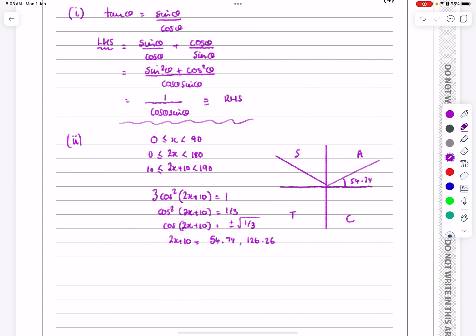I'm going to get that 2x plus 10 works out to be 54.74 degrees and then 126.26 degrees. This is 54.74, this one here will be 126.26, and then there are no other values which are going to fit within that range there.